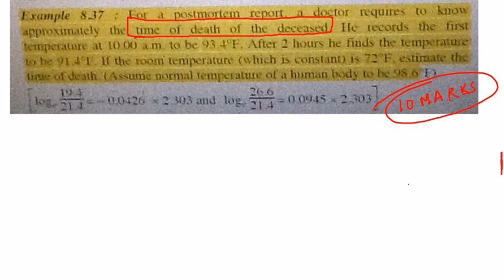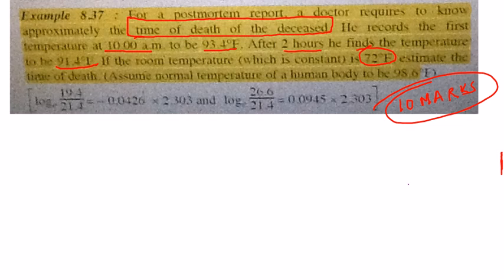They record the first temperature at 10 o'clock in the morning and it is 93.4°F. After two hours the temperature becomes 91.4°F. Obviously the temperature keeps reducing because the person is dead. The room temperature is given as 72°F. What we have to do is find the time of death.